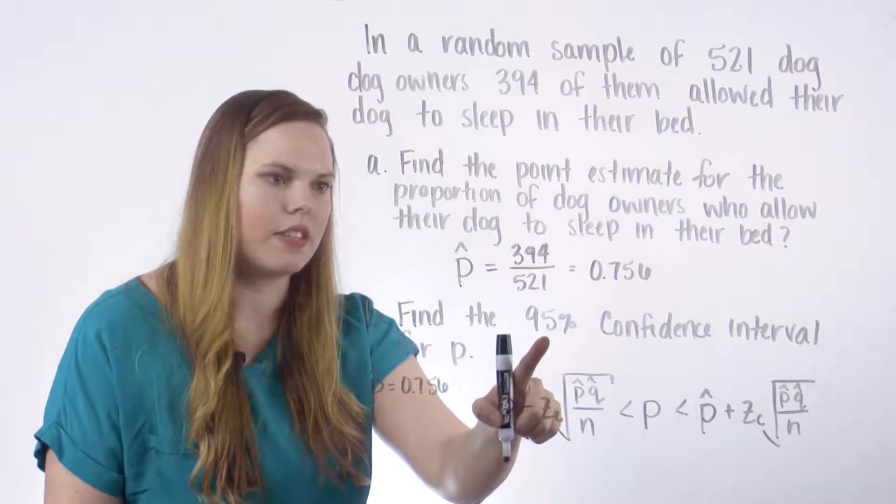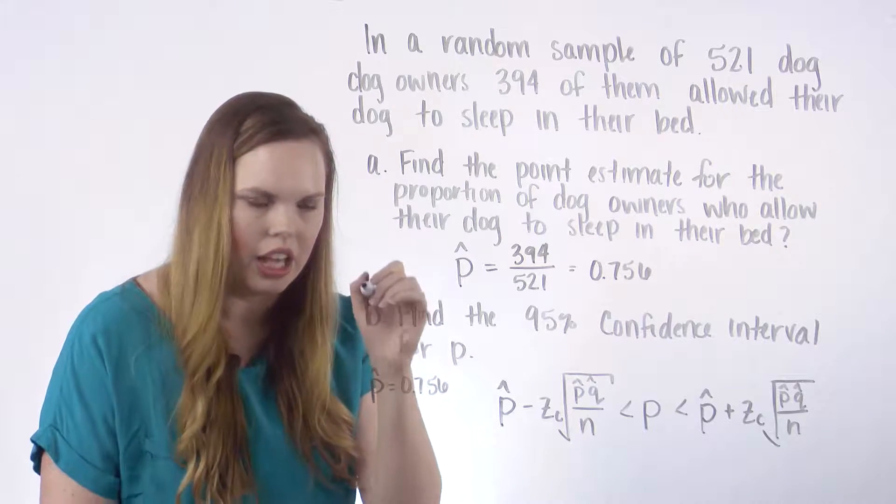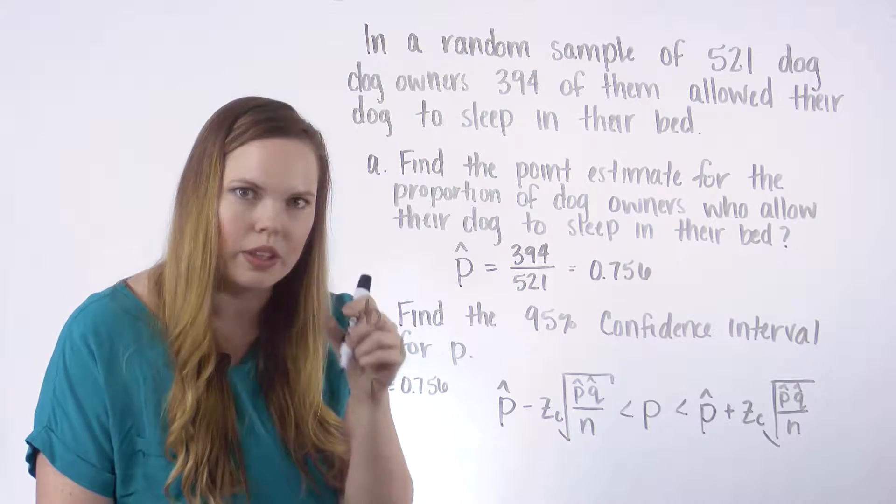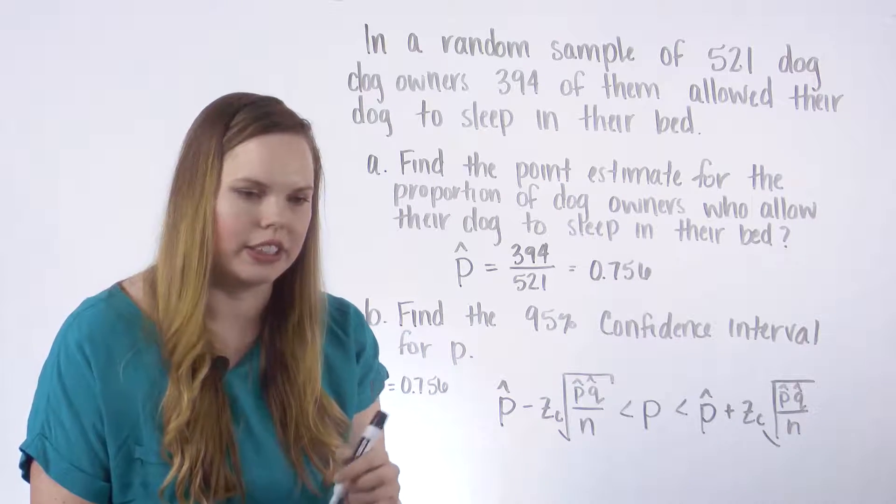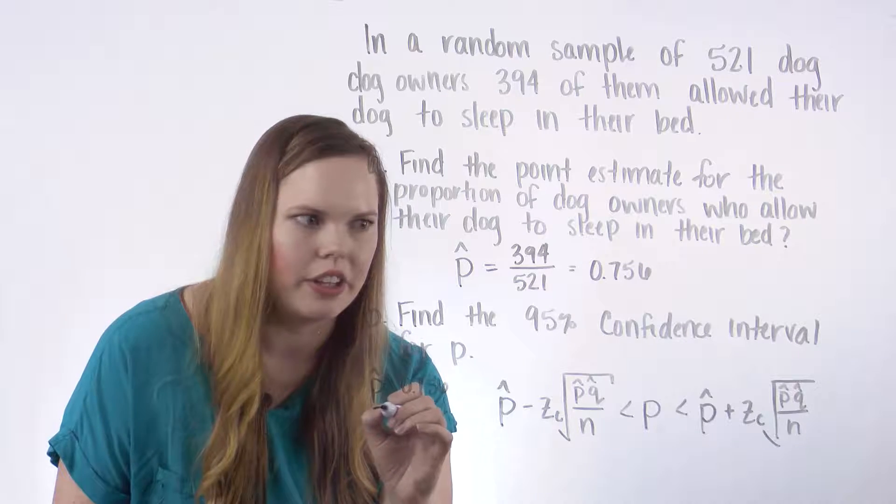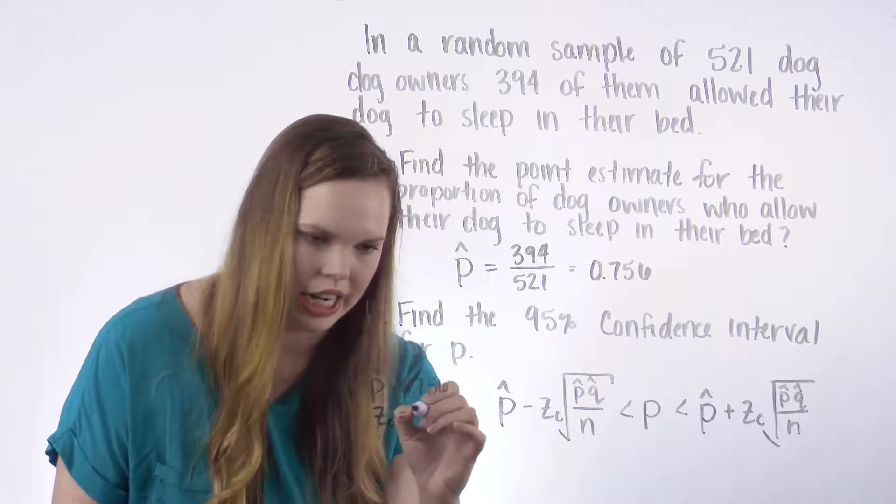Z sub C is from a 95% confidence interval. And if you use that normal distribution table, the little table in the bottom that tells you your critical values for confidence intervals, a confidence level of 95% has a Z sub C of 1.96.